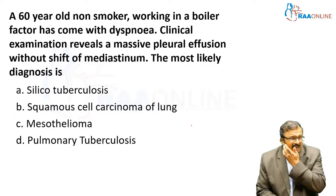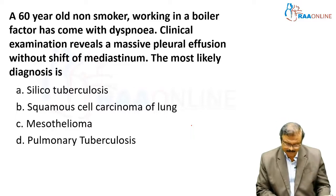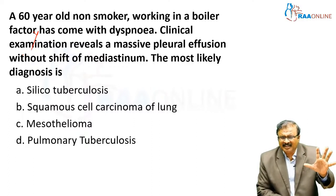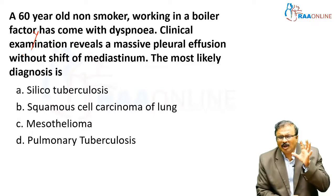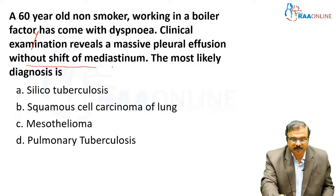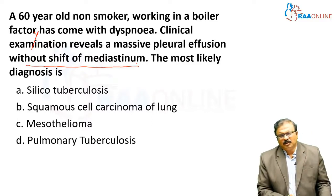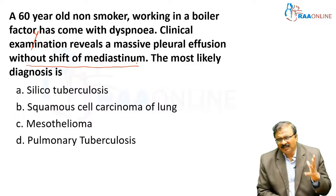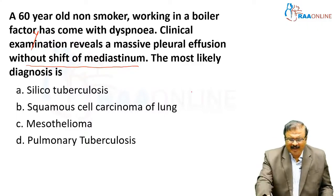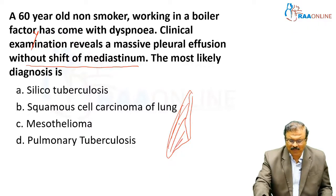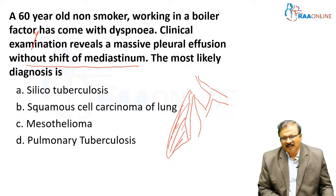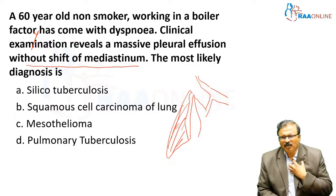Here is a clinical scenario: a 60-year-old non-smoker working in a boiler factory has presented with dyspnea. Clinical examination reveals a massive pleural effusion. In full pleural effusion with collapse, the trachea is deviated to the opposite side along with the mediastinum. However, in this case there is a massive pleural effusion without shift of the mediastinum.